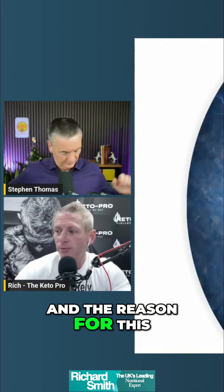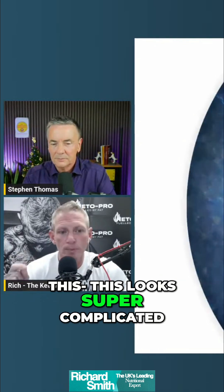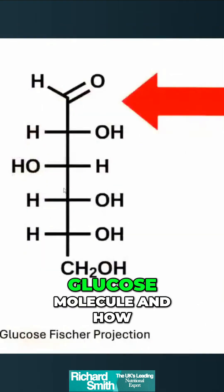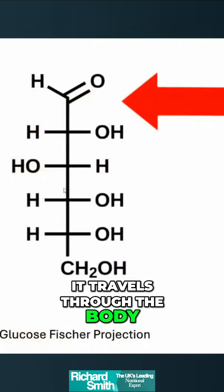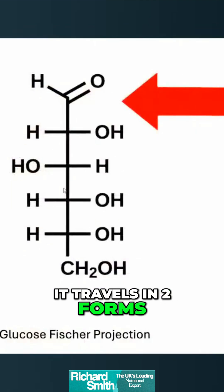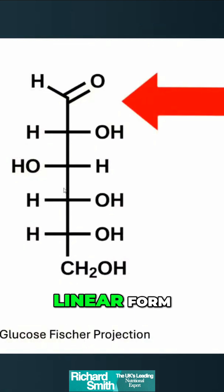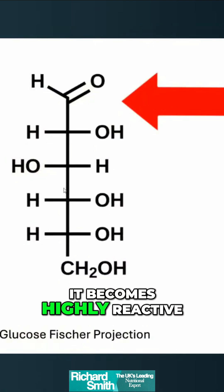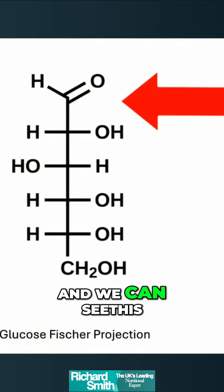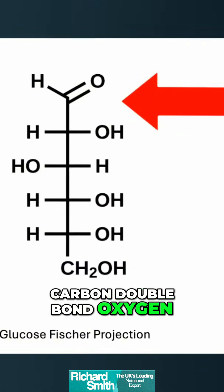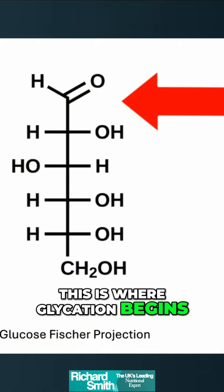And the reason for this — this looks super complicated, but I promise it's simple. This is a glucose molecule, and how it travels through the body. It travels in two forms: in its linear form and a cyclical form. When it's in its linear form, it becomes highly reactive — we can see this carbon double bond oxygen. This is where glycation begins.